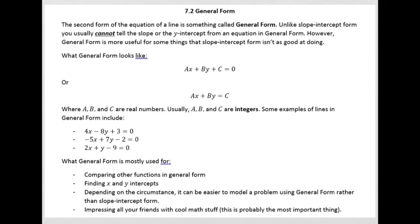Because there's an A, B, C. It looks like this: Ax plus By plus C equals zero.